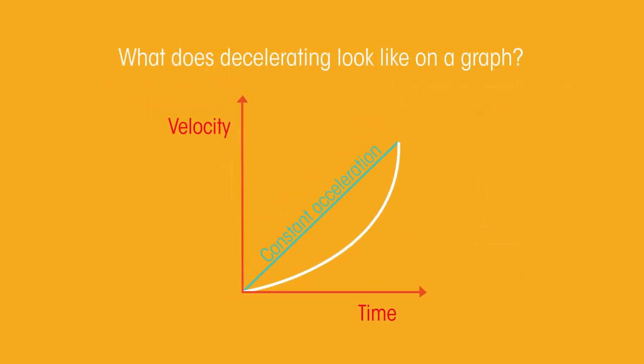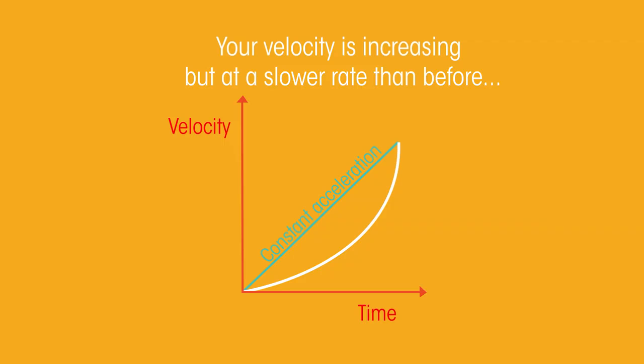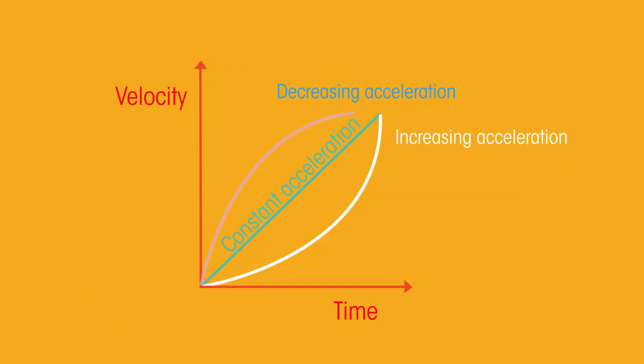Or maybe you're decreasing your acceleration, so you started off with a big push accelerating quickly, and now you're accelerating up to your max speed at a slower rate. What do you think this would look like on a graph? So your velocity is increasing, but at a slower rate than before. Pause the video and have a think. Did you think a curve like this? The car is still accelerating, but the rate of acceleration is slowing.